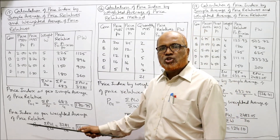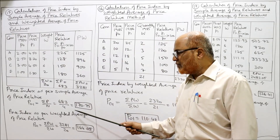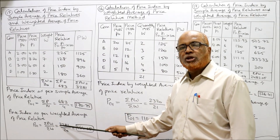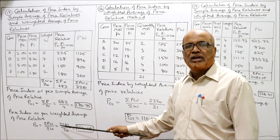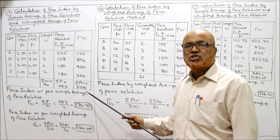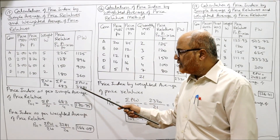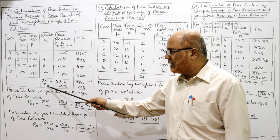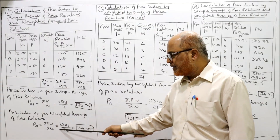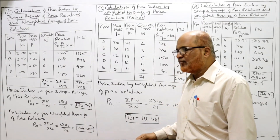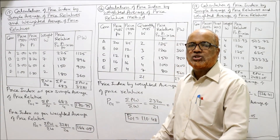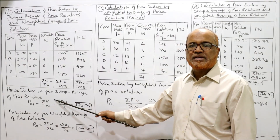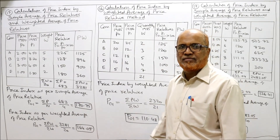Now weighted average: price index as per weighted average of price relatives, P01 = summation PW divided by summation W. PW is 3,281 and summation W is 20. So 3,281 divided by 20 = 164.05. This is the price index according to weighted average of price relatives.